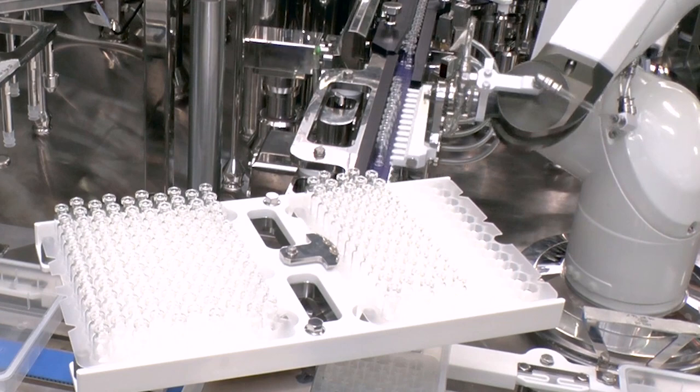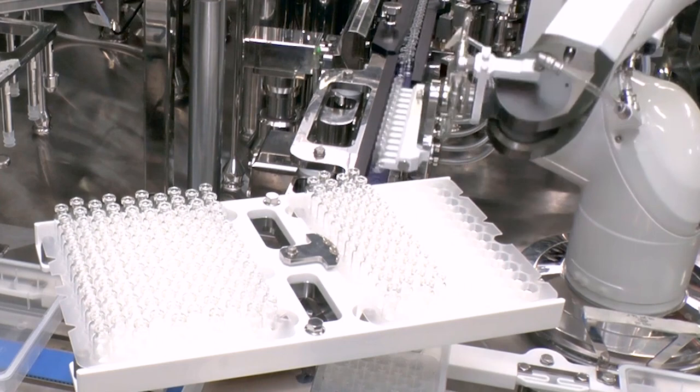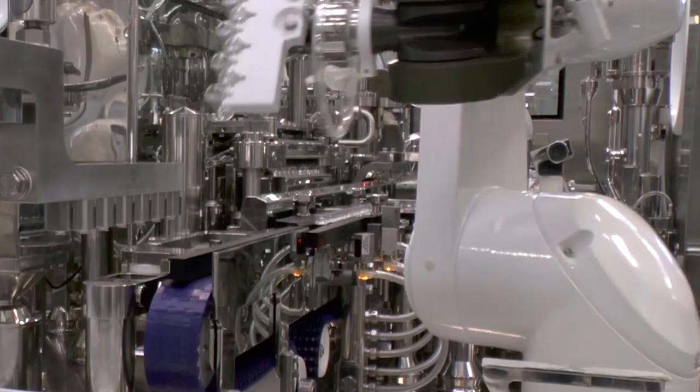Vials are automatically lifted out of the denesting tray or tub, row by row, and placed into the in-feed conveyor towards the filling station.